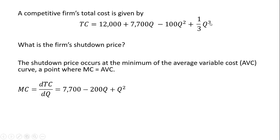And then this last term here, we bring the 3 down in front, so 3 times 1/3 is just 1. And then we're going to subtract 1 from the exponent up here, and you're just going to be left with Q squared. So that's our marginal cost equation.